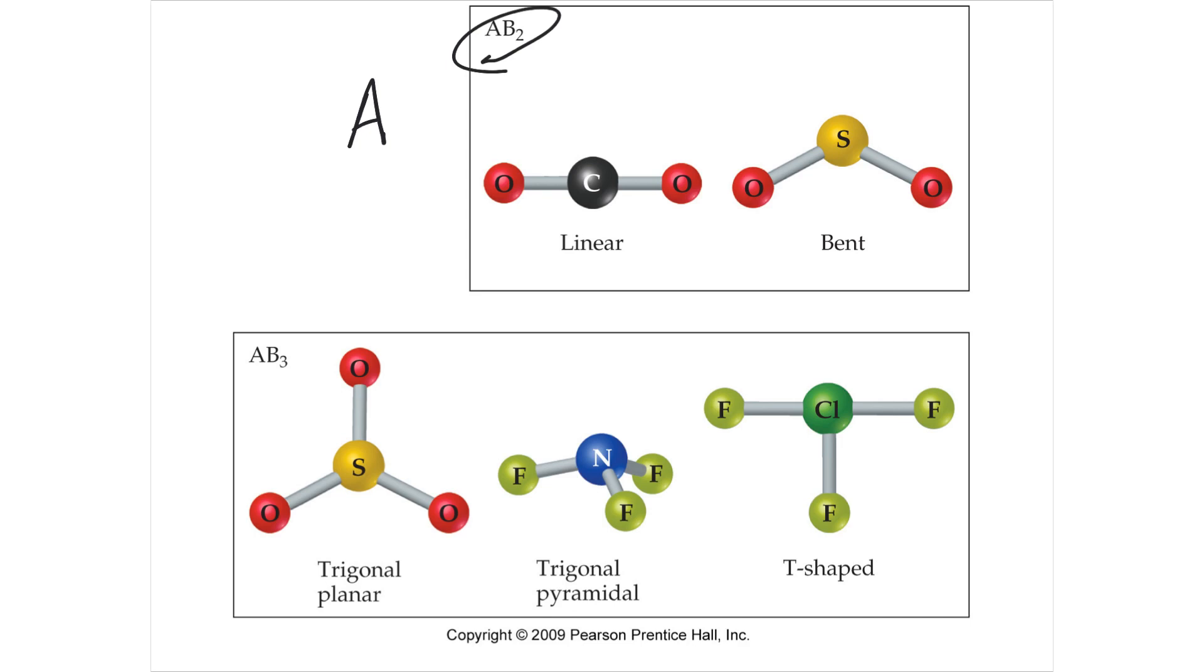So if you have oxygen here and carbon as the black here, you could have something like carbon dioxide, where you have the carbon would be the A, and the oxygens would be the B, and you have two oxygens attached to one central carbon. That would be a linear.